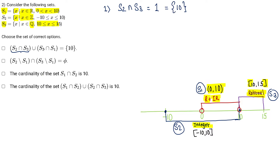Now let's talk about S3 and S1 intersection. S3 and S1 — considering the exclusions — we will get a singleton set which has only the value 10 in it. So option A is correct.